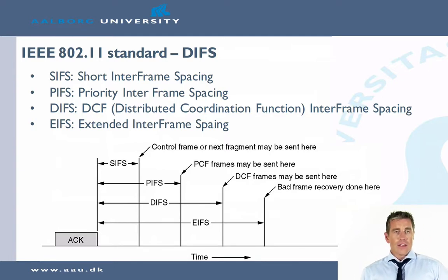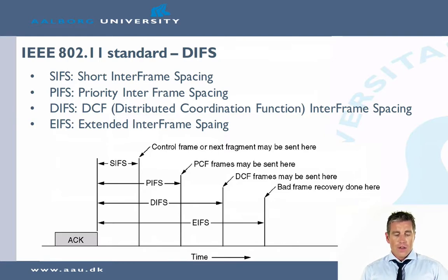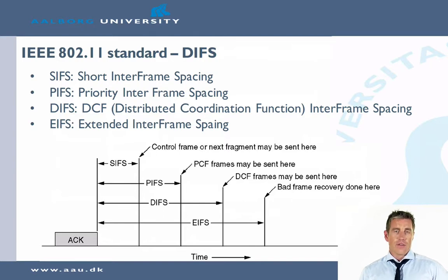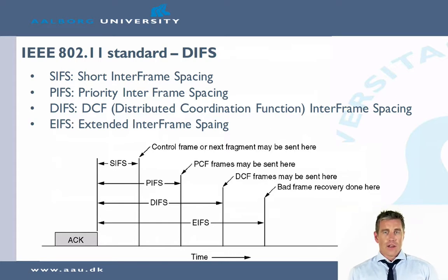If that does not happen within a certain amount of time, then we also allow for priority interframe spacing. And if that doesn't trigger anything, then we allow for what is called DIFS — the distributed coordination function interframe spacing. If that also doesn't keep the medium busy, then we have an extended interframe spacing. In all these different periods of time we can send different kinds of frames, so the idea is to prioritize when we can send which type of frames.